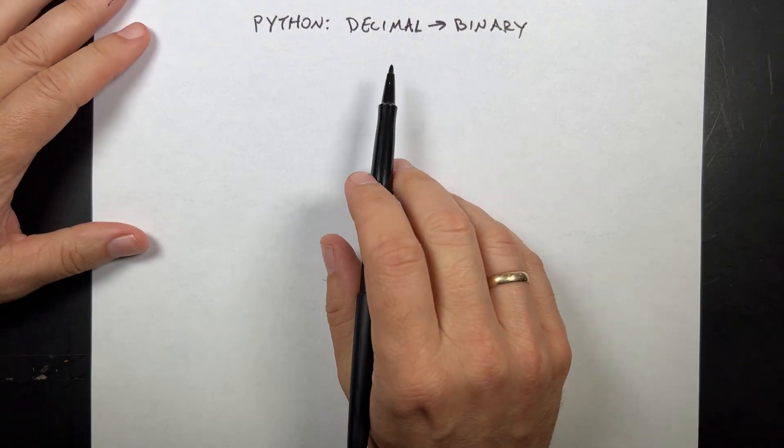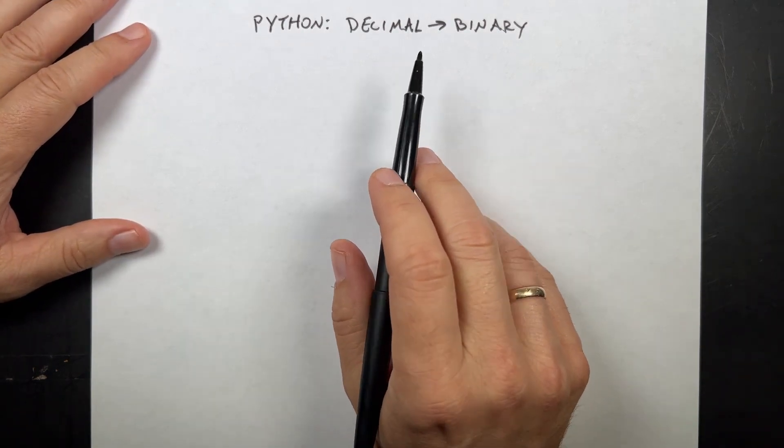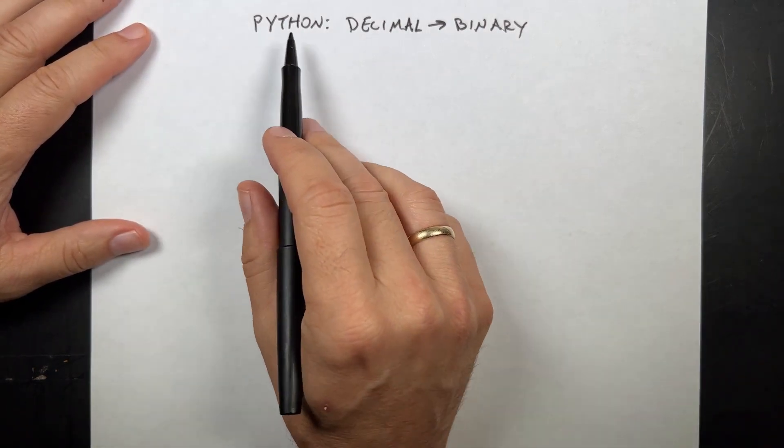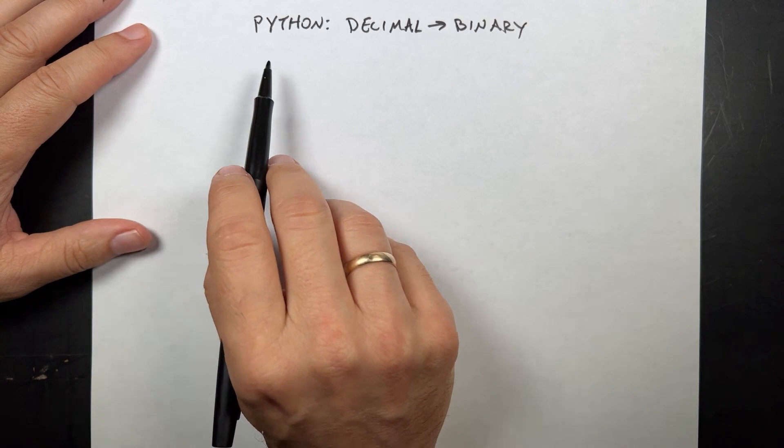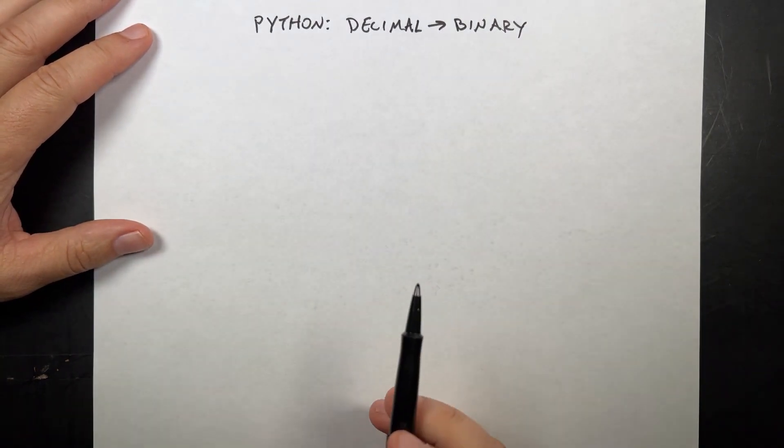I made a video showing how to create a Python program that converts binary to decimals. Let's do the other way around.